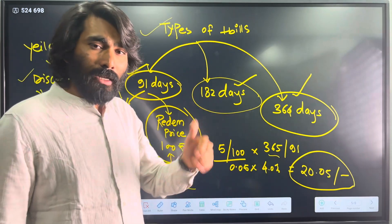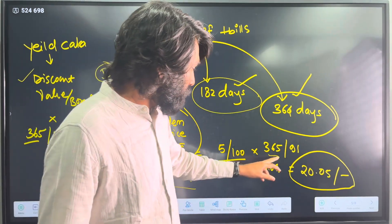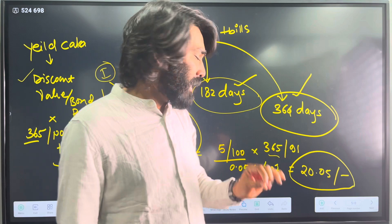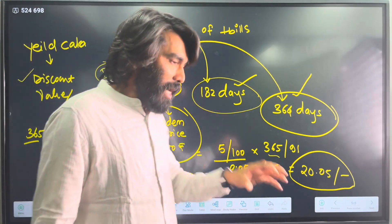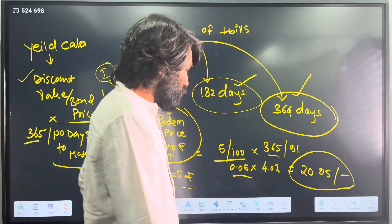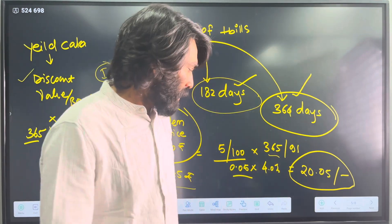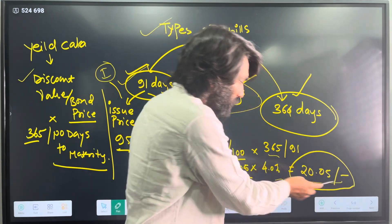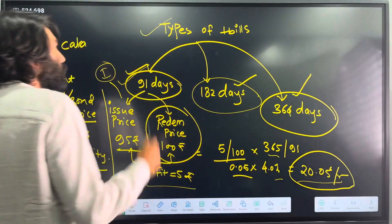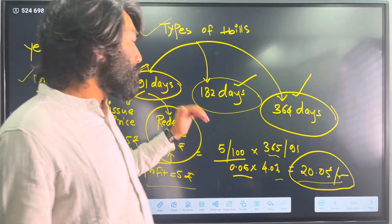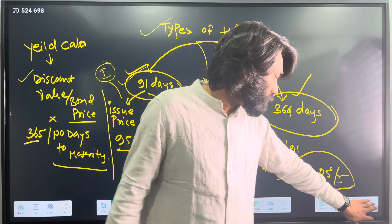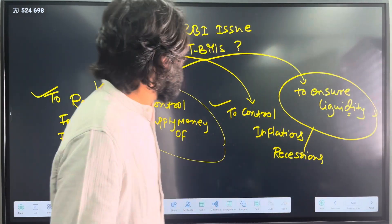To convert that into an annualized percentage yield: take the discount of 5, divide by the redemption price of 100, giving 0.05. Then multiply by 365 divided by 91. That gives approximately 0.05 × 4, which equals roughly 20%. So 20% would be the annualized yield of your T-bills. This is how you can compute yields for any government fixed income securities, and this is important from an exam perspective.